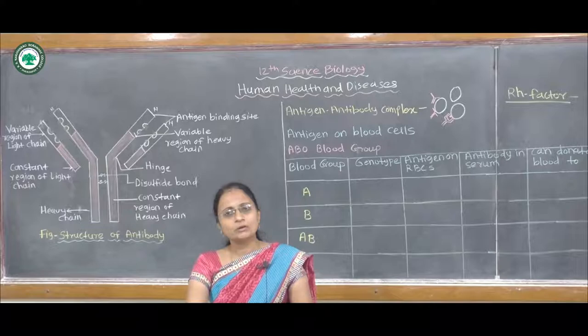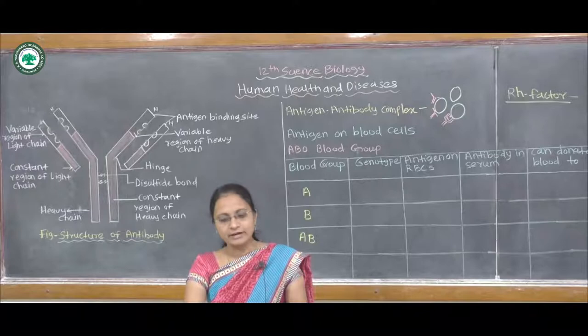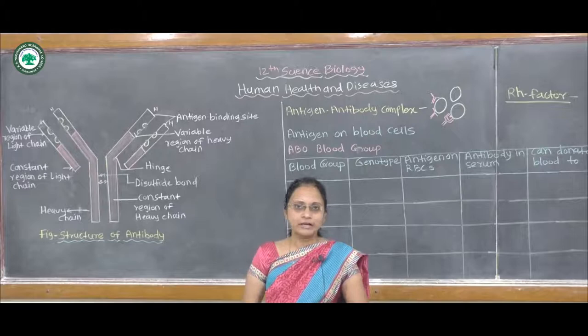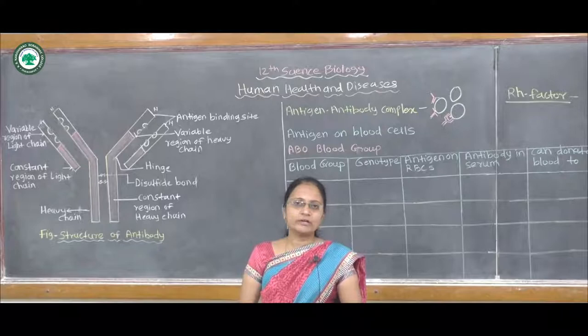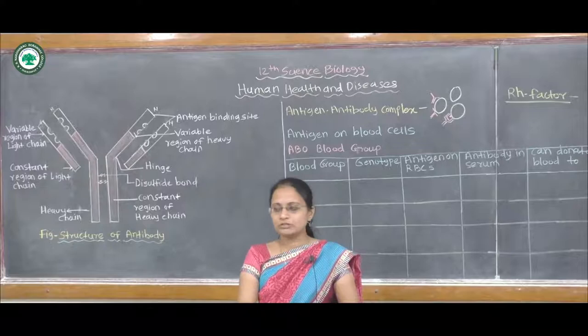Now we know what is an antigen and what is an antibody. Antigens are present on the surface of RBCs. Antigens are foreign substances that invade the body and are capable of stimulating an immune response. Antibodies are nothing but protective chemicals produced by the immune system in response to antigens. These antibodies are produced when the antigens signal that they are required, and so antibodies are produced inside the body.